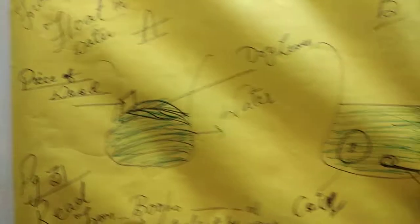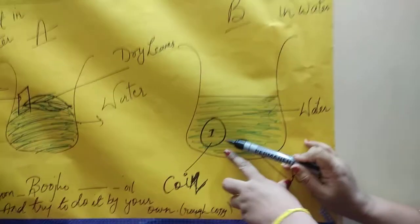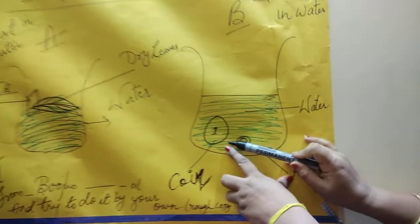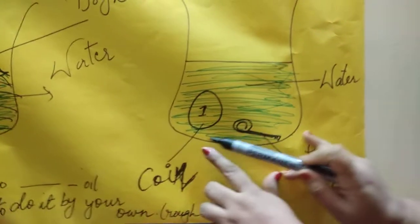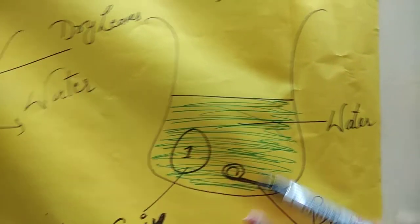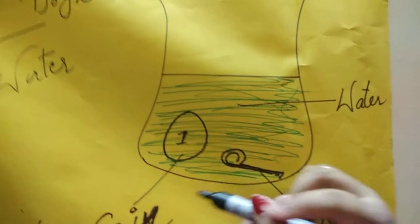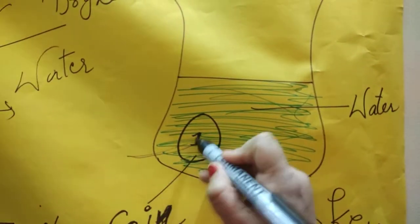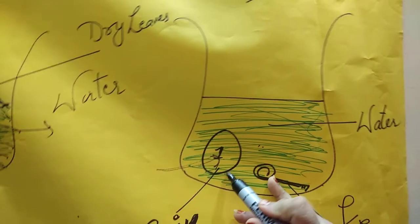Now come to another part that is beaker number 2, beaker B. Here I took a coin, a metal coin. What will happen to that metal coin? That coin is there at the bottom of the water. When it is at the bottom of the water it indicates that coin is heavier than water. That is why it sinks at the bottom.